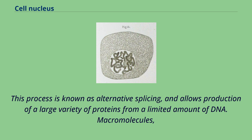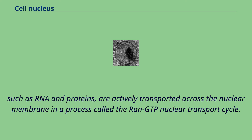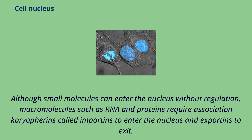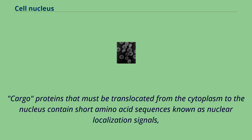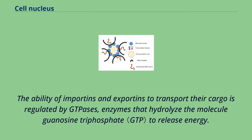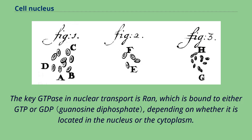Macromolecules such as RNA and proteins are actively transported across the nuclear membrane in a process called the RAN-GTP nuclear transport cycle. The entry and exit of large molecules from the nucleus is tightly controlled by the nuclear pore complexes. Although small molecules can enter the nucleus without regulation, macromolecules such as RNA and proteins require association with karyopherins — called importins to enter the nucleus and exportins to exit. Cargo proteins that must be translocated from the cytoplasm to the nucleus contain short amino acid sequences known as nuclear localization signals, which are bound by importins, while those transported from the nucleus carry nuclear export signals bound by exportins. The key GTPase in nuclear transport is RAN, which is bound to either GTP or GDP depending on whether it is located in the nucleus or the cytoplasm.